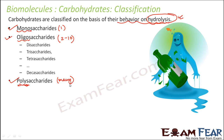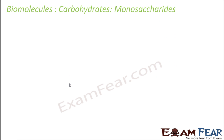So these are the three types of carbohydrates: monosaccharides, oligosaccharides, and polysaccharides. We will now talk about each of them gradually, starting with monosaccharides.